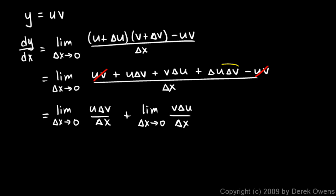And then I'll do the third, which is this. Plus the limit as delta x approaches 0, of delta u delta v over delta x.